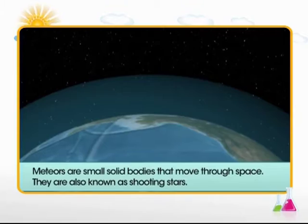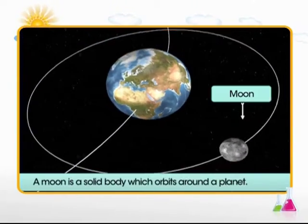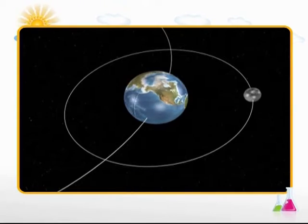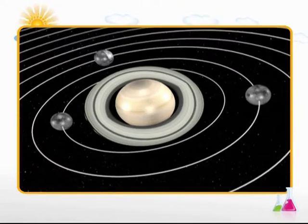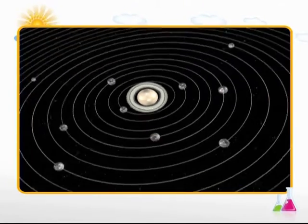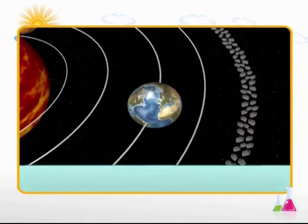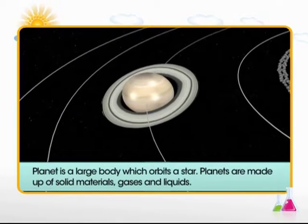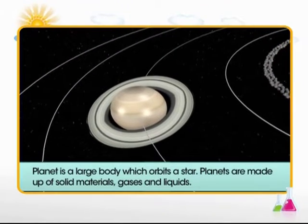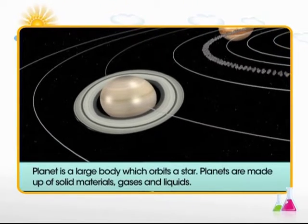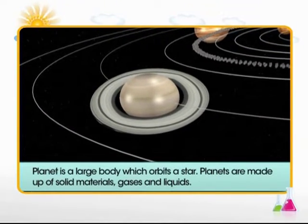A moon is a solid body which orbits around a planet. The earth has only one moon but larger planets such as Saturn can have over 20 moons. A planet on the other hand is a large body which orbits a star. Planets are approximately spherical and are made up of solid materials, gases and liquids.